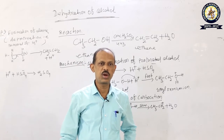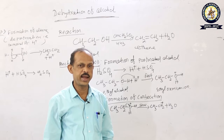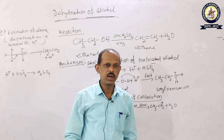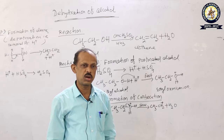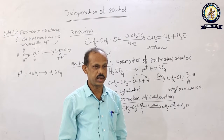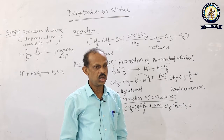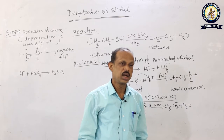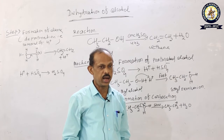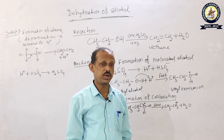Welcome to our chemistry class. Today we will discuss the mechanism of dehydration of alcohol for the formation of alkene. In the last class we discussed dehydration of alcohol at 170 degrees centigrade, where alkene is formed from primary, secondary, or tertiary alcohol. Dehydration of alcohol takes place with concentrated sulfuric acid, concentrated H3PO4, or with Al2O3 at high temperature — many dehydrating agents are available.